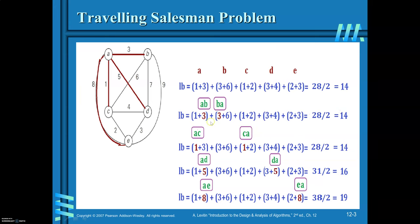From A to B: if you decide to go to B, then edge AB and edge BA must both be included. This is similar to the initial lower bound calculation — the same values apply, so the total is 28 divided by 2, which is 14.